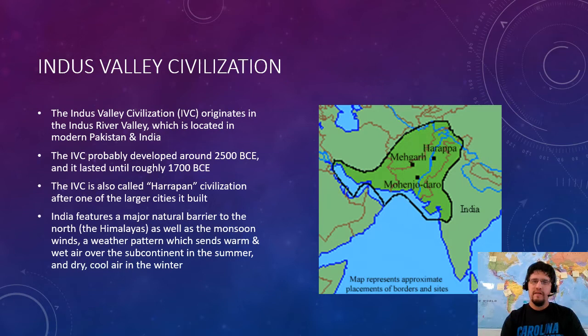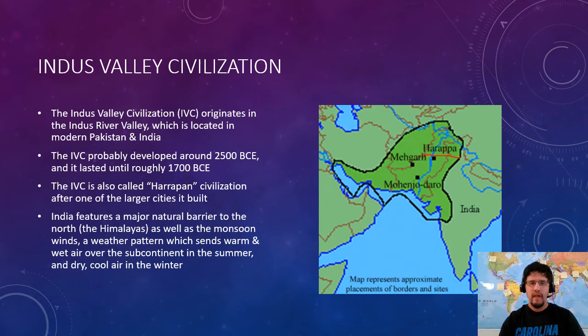The IVC lasts about 800 years, from 2500 BCE to 1700 BCE. It's sometimes called Harappan civilization because one of the earliest sites we discovered was a place called Harappa. You won't see that in newer sources — that's kind of an older source thing — but just in case you run into it in a primary source, IVC and Harappan civilization are the same thing.